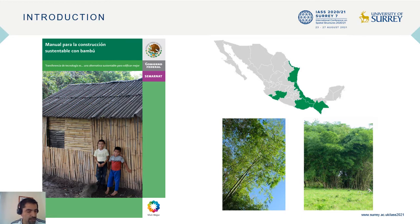Bamboo has been used for generations in several countries as a construction element, mainly in rural areas. In recent years, given the need to preserve nature, reduce waste and emissions, as well as the concern to optimize resources and materials, bamboo has been taken up again as an alternative material in construction. The Manual for Sustainable Construction with Bamboo, created by the Mexican government, clearly exposes the advantages of this material in energy consumption for its manufacture.